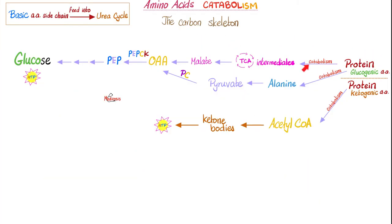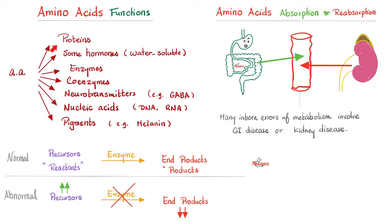Here is the fate of glucogenic amino acids: they end up as glucose. The fate of ketogenic amino acids: they end up as ketone bodies. Both can give you energy. Gluconeogenesis and ketogenesis both belong to the glucagon world, not the insulin world, because the glucagon world is catabolic. The functions of amino acids include making proteins, water-soluble hormones, enzymes, coenzymes, neurotransmitters, nucleic acids, and melanin.